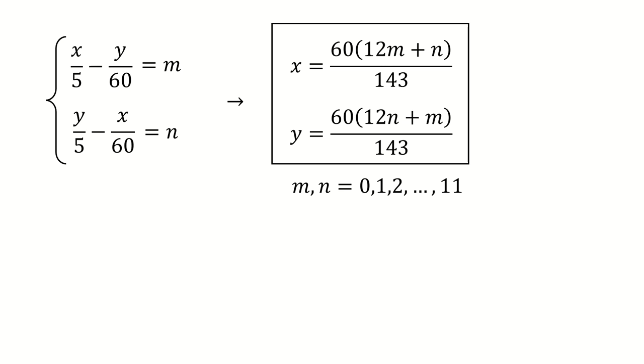So it seems you have 12 positions for m and 12 positions for n. So in total it seems 144 positions. But remember that the case for 0 and the case for 11 are the same. Both of them show the 12 o'clock. So you have 143 different positions.